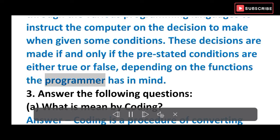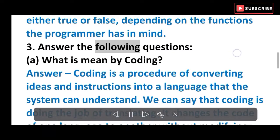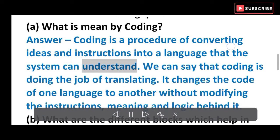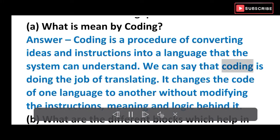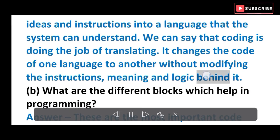These decisions are made if and only if the pre-stated conditions are either true or false, depending on the functions the programmer has in mind. 3. Answer the following questions. (a) What is meant by coding? Answer: Coding is a procedure of converting ideas and instructions into a language that the system can understand. We can say that coding is doing the job of translating. It changes the code of one language to another without modifying the instructions, meaning, and logic behind it.